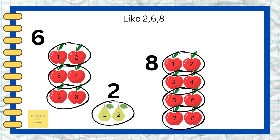Number six is an even number — it is also divided evenly in groups of two. Number eight is also equally divided in groups of two.